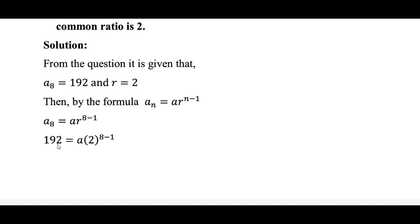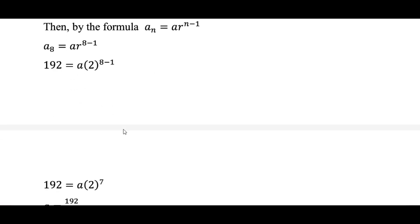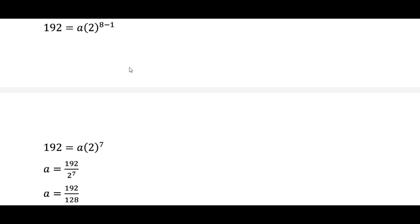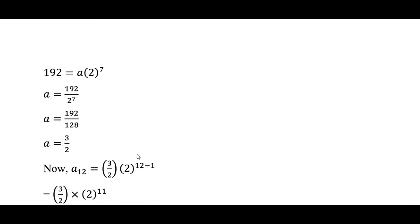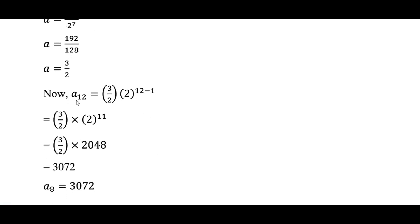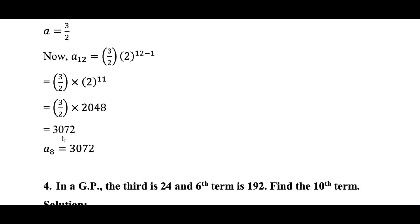So A8 is equal to A times 2 to the power 8 minus 1, which equals 192. Using this equation to find the value of A, we get A equal to 3/2. Now A12 is equal to (3/2) times 2 to the power 12 minus 1, which gives 3072. So the 12th term is 3072.